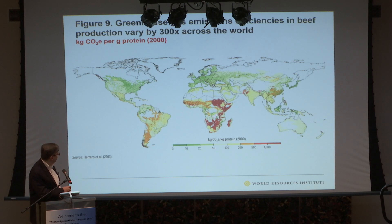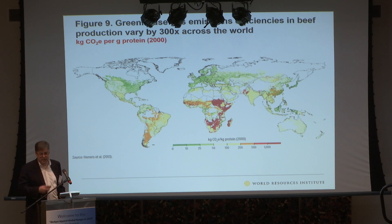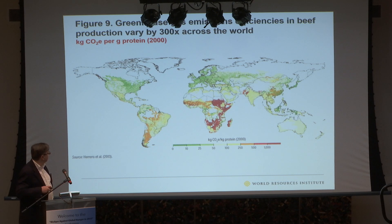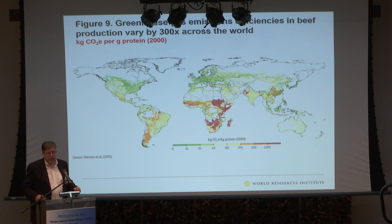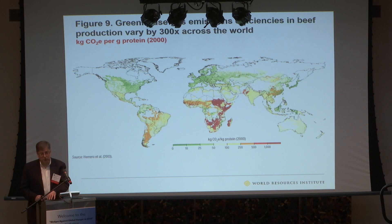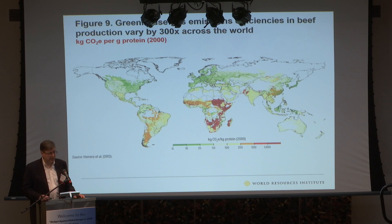If you feed animals better, you produce far fewer production emissions — primarily the methane produced in animals' stomachs. A map of greenhouse gas emissions produced for beef in different parts of the world shows a factor-of-300 difference: in some parts of the world, for each kilogram of beef produced, you generate 300 times the emissions compared to the most efficient places.